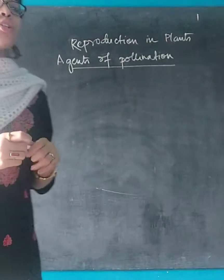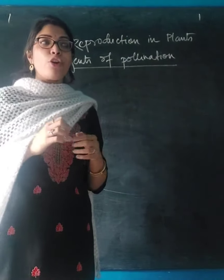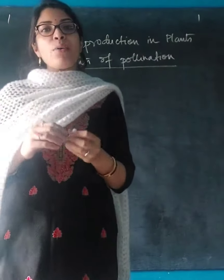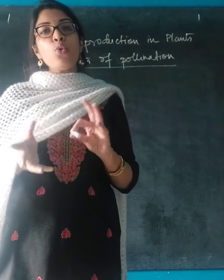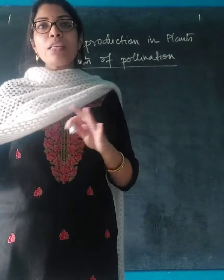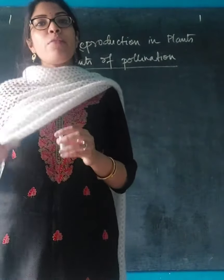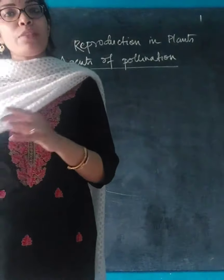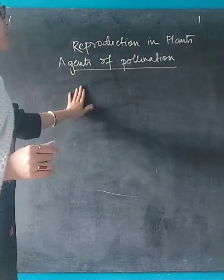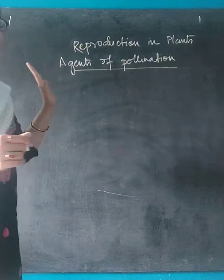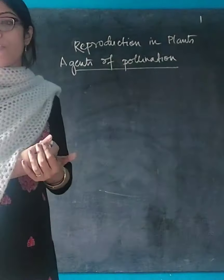While talking about cross pollination in my last class, I already said that for cross pollination to take place, flowers have to depend on external agents who will perform the transfer of pollen grains from the male flower to the female flower of a different plant but of the same species. Today we are going to talk about the different agents of pollination — mainly four agents.